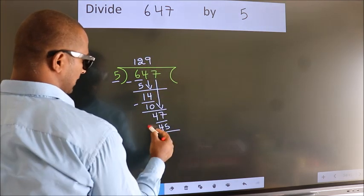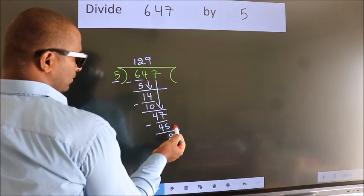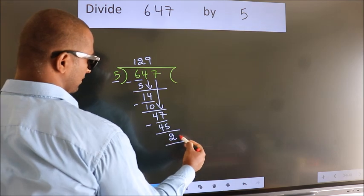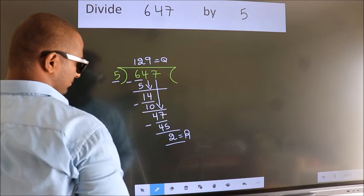Now we subtract and we get 2. No more numbers to bring down, so we stop here. This is our remainder; this is our quotient.